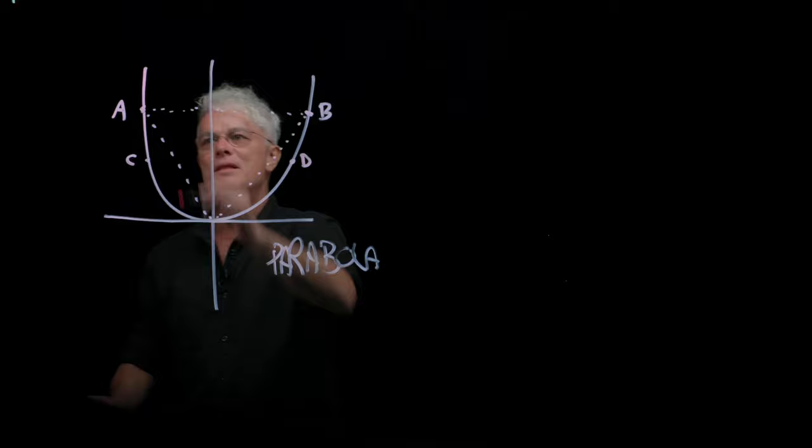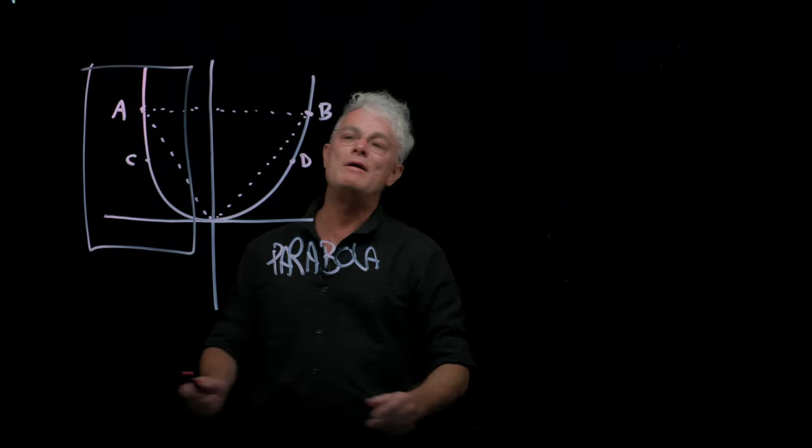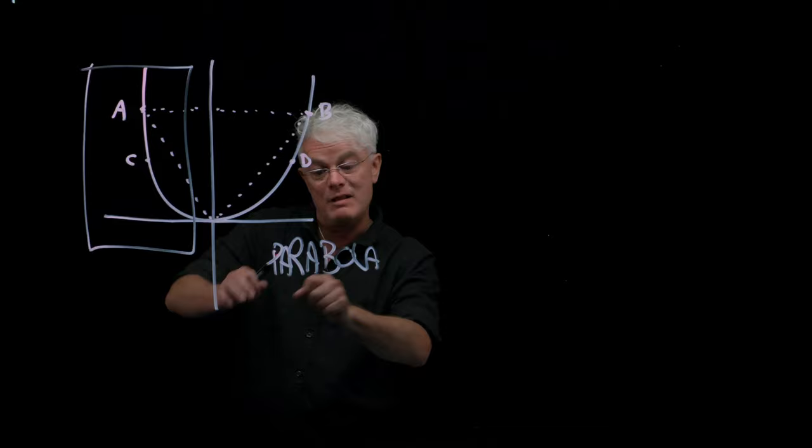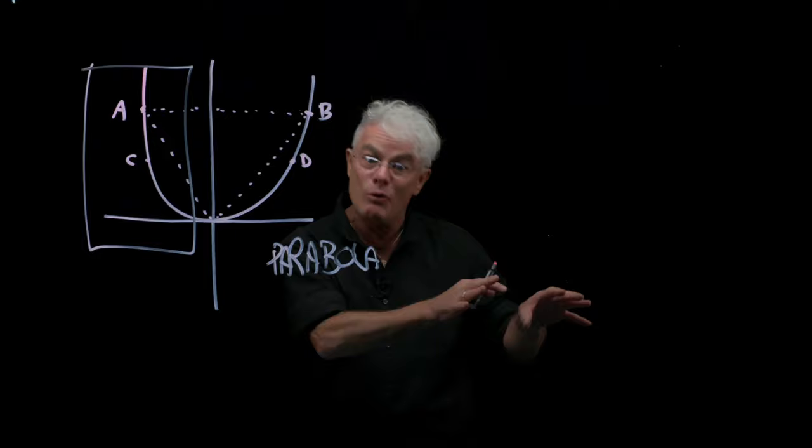You have a hypothetical story. Once upon a time, a sower went out to sow some seeds. And as he sowed the seeds, some of the seeds fell on the pathway. Some fell amongst the rocky ground. Some fell amongst the thorns and the weeds. And some fell on good soil. So it's a hypothetical story.